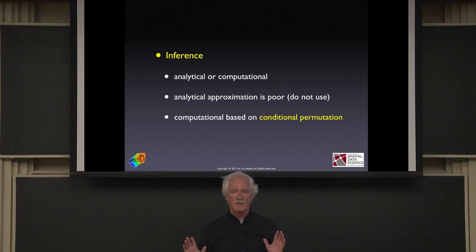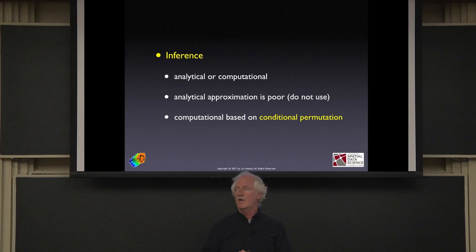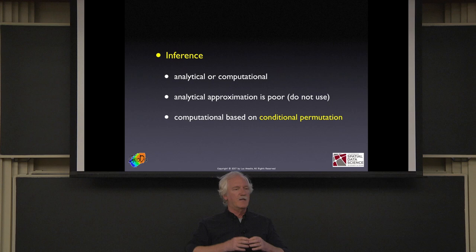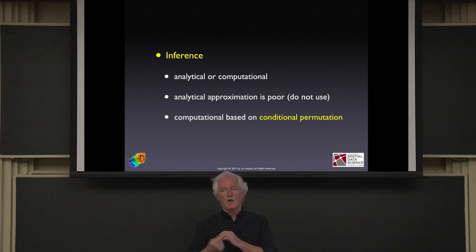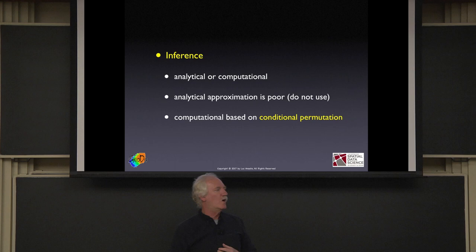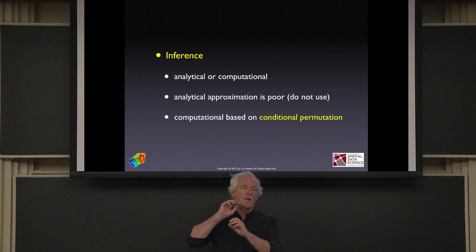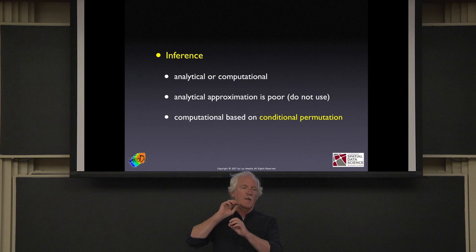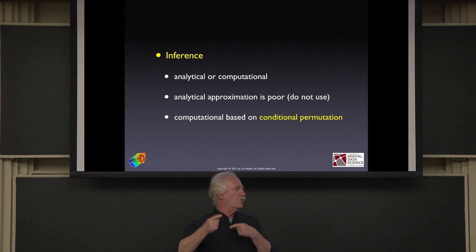Inference is a pain. You can do it analytically but it's an approximation and a terrible one. Approximations are based on large sample ideas — the idea that the statistic converges as the data set grows. One problem with the local statistic is that because it is a local estimate and the number of neighbors is fairly small, it doesn't actually grow. Even though you can go through all the mathematical contortions, conceptually this approximation isn't really happening.